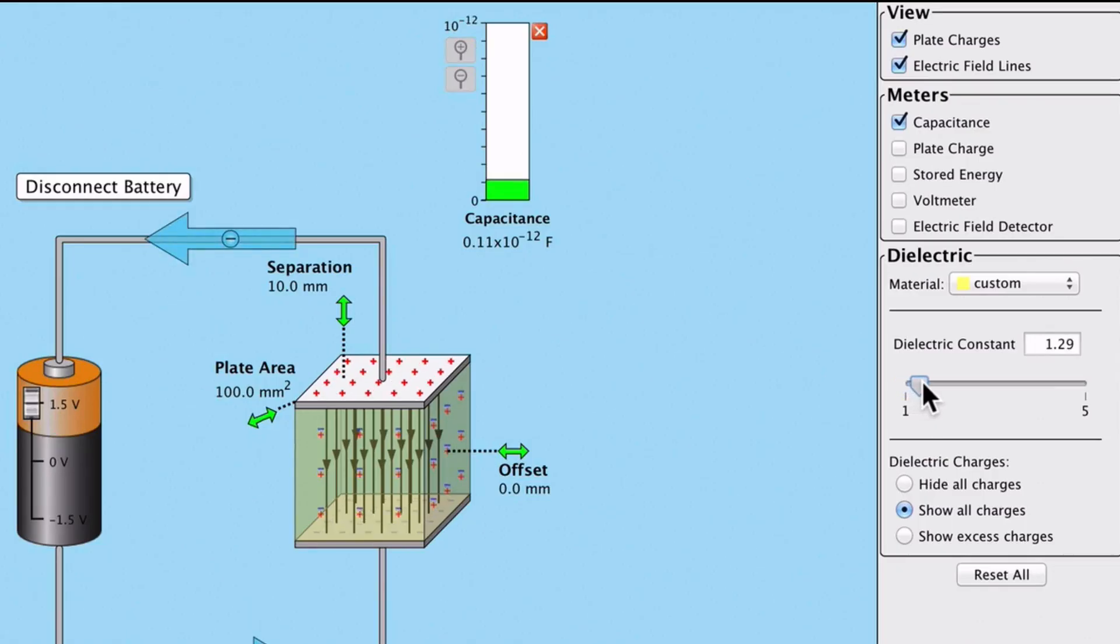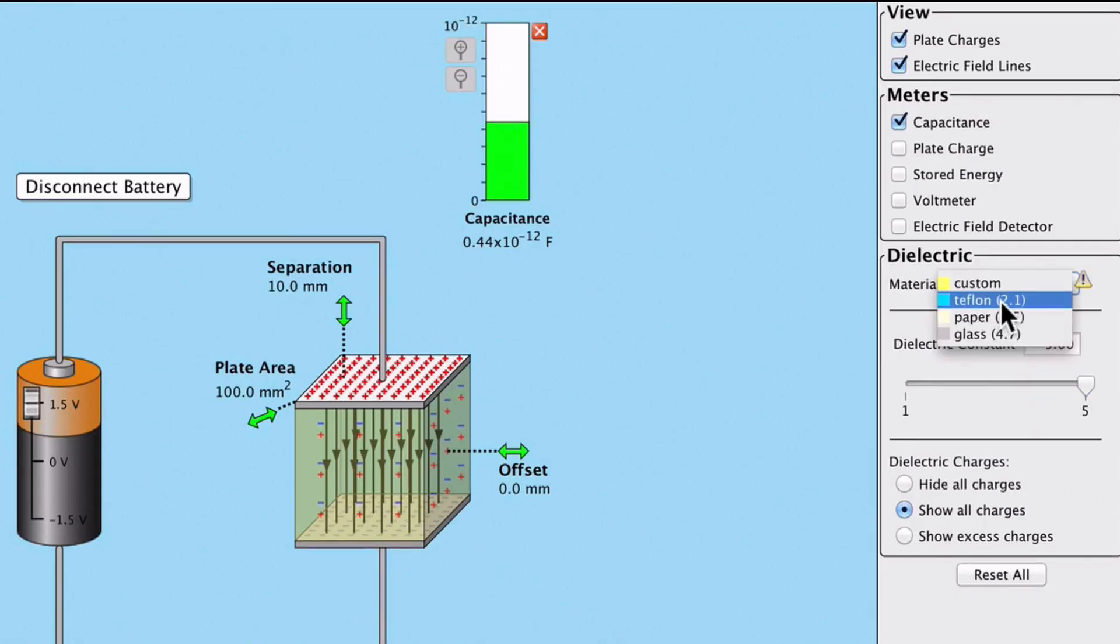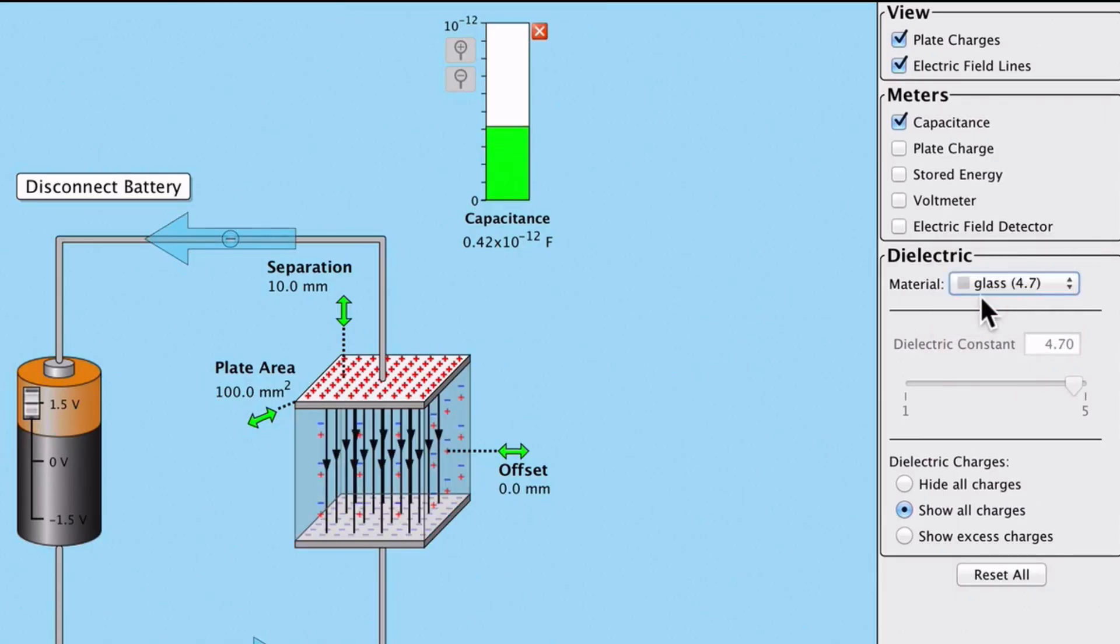But if I start to increase the permittivity, watch what happens to the charge on the plates. Now we are at 2. Now we are at 3. Now we are at 4. You can see charge is building up on the plate. Each material—Teflon 2.1, paper 3.5, glass 4.7—is going to have a different constant.